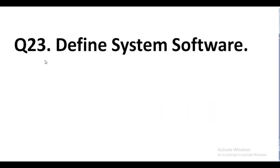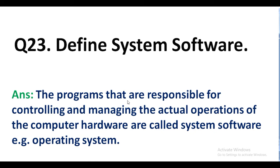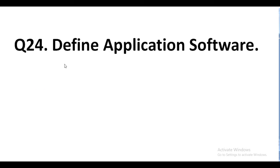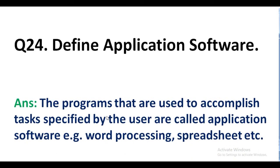Question number 23. Define system software. Answer. The programs that are responsible for controlling and managing the actual operations of the computer hardware are called system software. Example: operating system. Question number 24. Define application software. Answer. The programs that are used to accomplish tasks specified by the user are called application software. Examples: word processing, spreadsheet, etc.